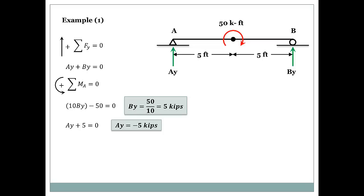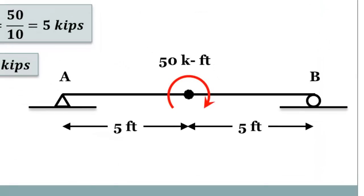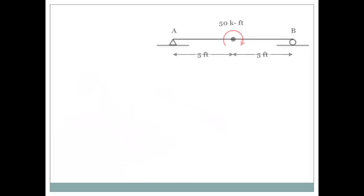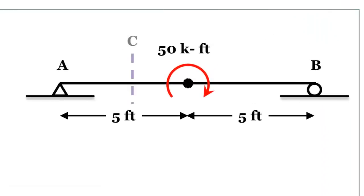The minus sign means the direction assumed for Ay was wrong — it doesn't mean the value is wrong, just the direction. So the correct direction for Ay is downward, and By is unaffected. Now we'll do it the long way by taking sections through the beam — section C between A and mid-span, and section D between mid-span and support B.